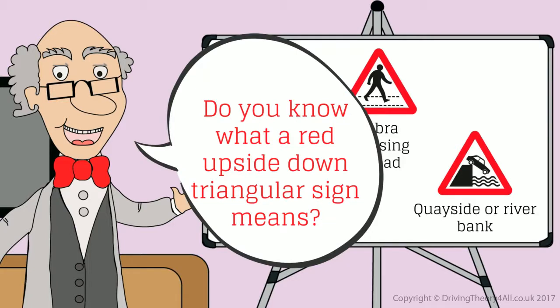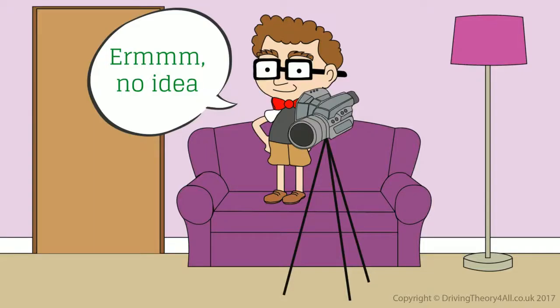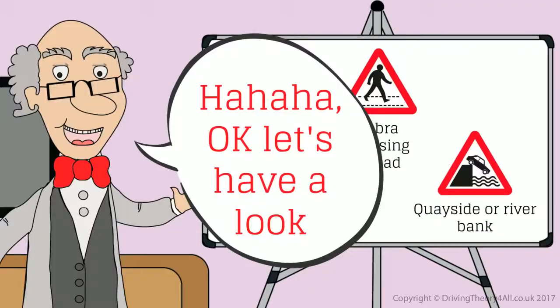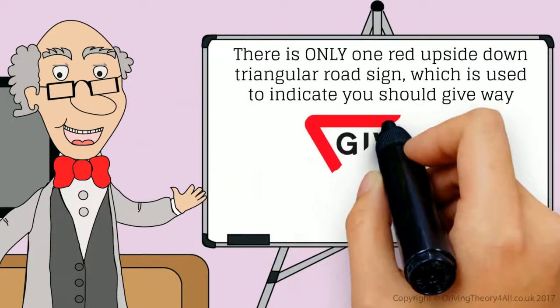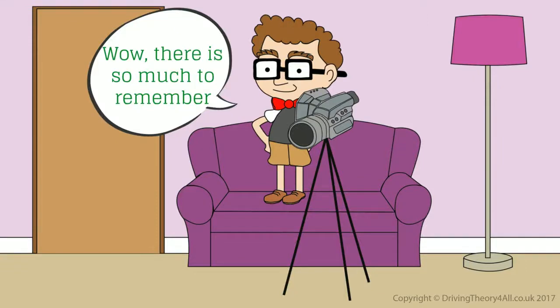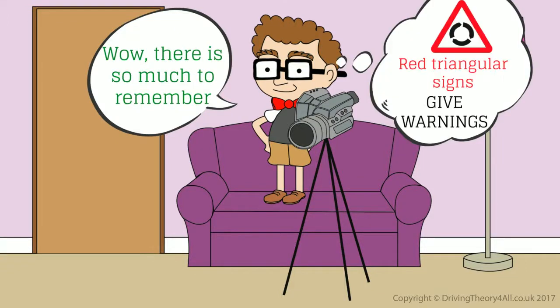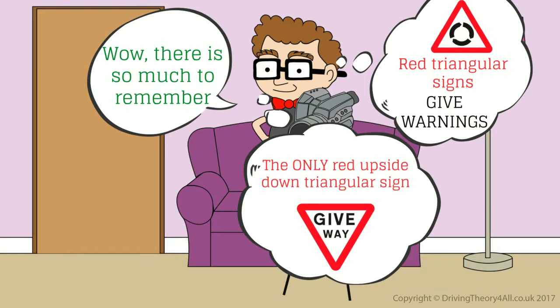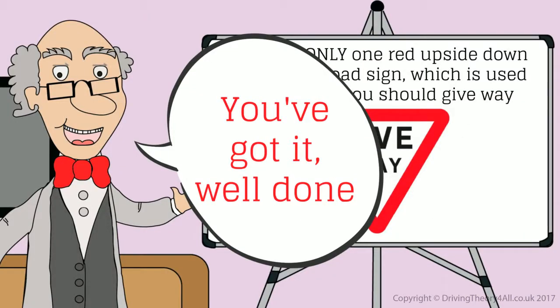Do you know what a red upside-down triangular sign means? No idea. OK, let's have a look. There is only one red upside-down triangular road sign, which is used to indicate you should give way. Wow, there is so much to remember. Red triangular signs give warnings. The only red upside-down triangular sign means give way. You've got it, well done.